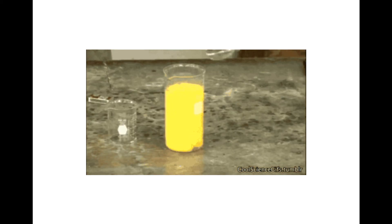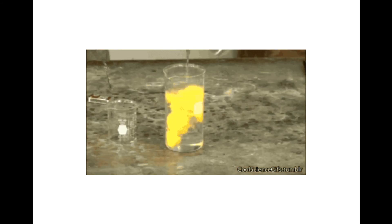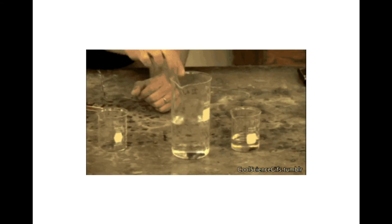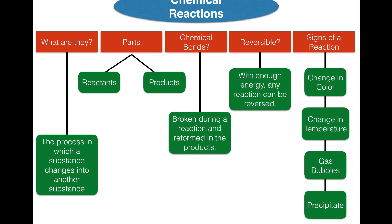Here's an example of a precipitate: two clear substances are combined, and instantly it turns yellow and a solid forms — two signs of a chemical change at once: a change in color and a solid forming from two liquids. To summarize: chemical reactions are the process in which a substance changes into another substance. You have reactants and products; chemical bonds are broken and reformed in the process. With enough energy, reactions can be reversed. And the signs to identify them are change in color, change in temperature, gas bubbles, and precipitate. That's your first lesson of the chapter — two more to go!